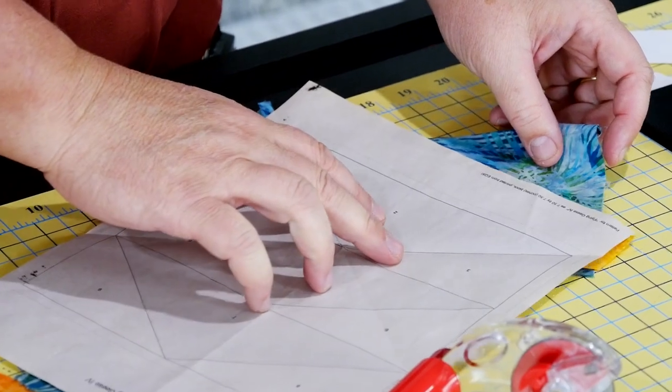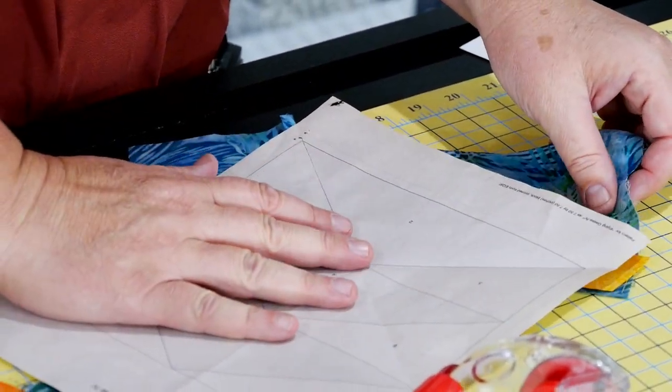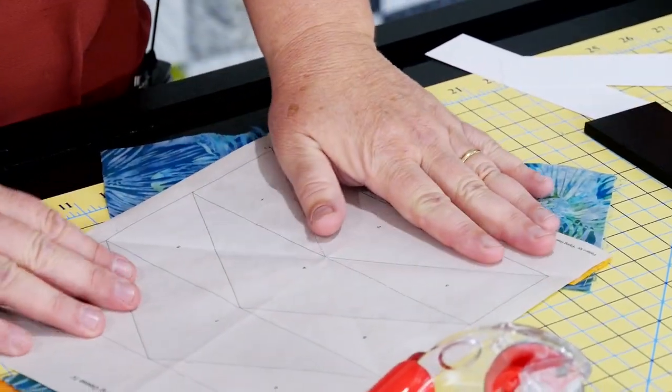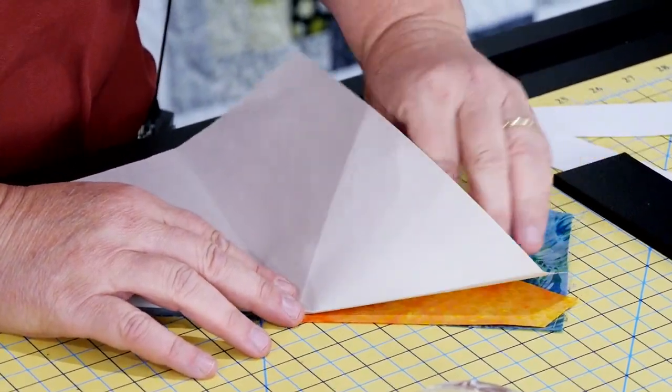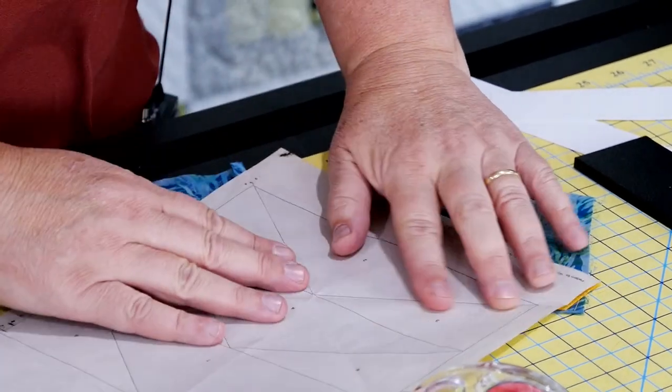What the ruler does is it gives you your quarter inch for your quilt block. So when you're done and you peel off all the paper, you have your exact quarter inch. Your block will come out the proper size. But that's how you do paper piecing.